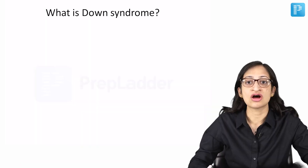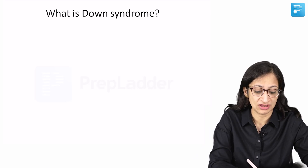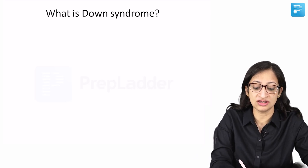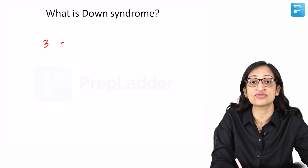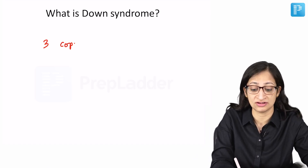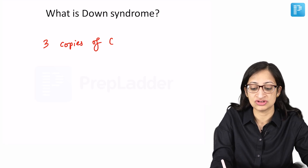Hello friends, in this video we are going to discuss about a very common genetic entity that is Down syndrome. Down syndrome is a condition where there are 3 copies of chromosome 21.